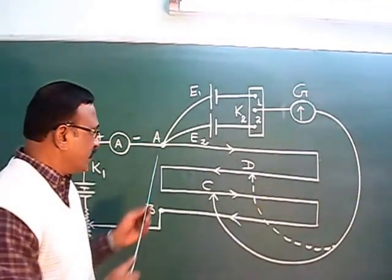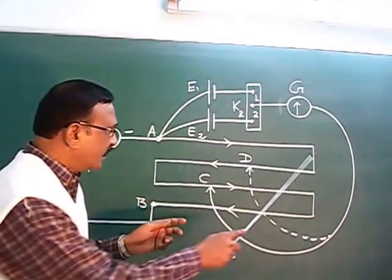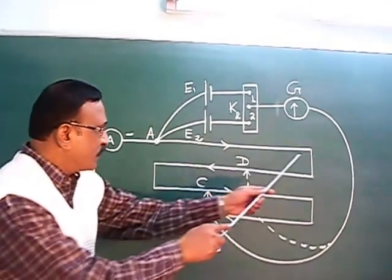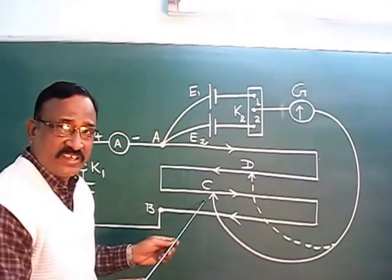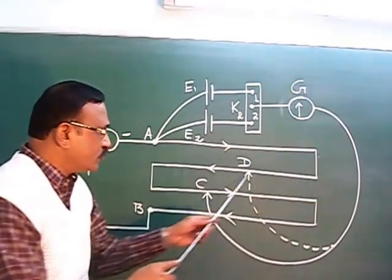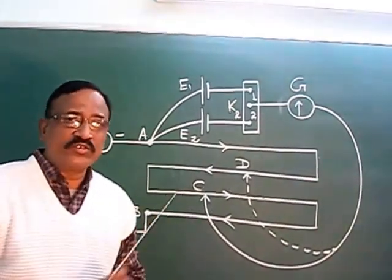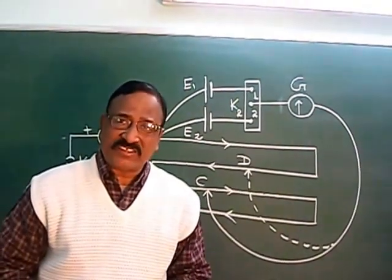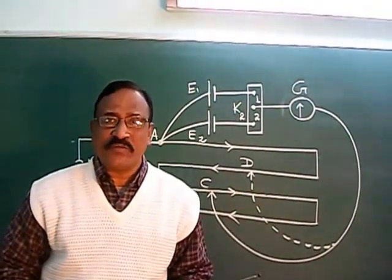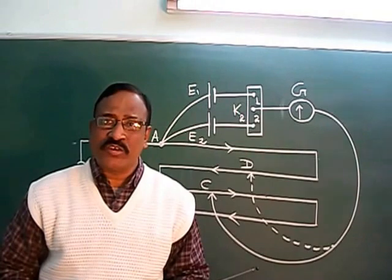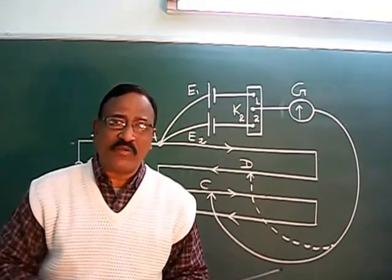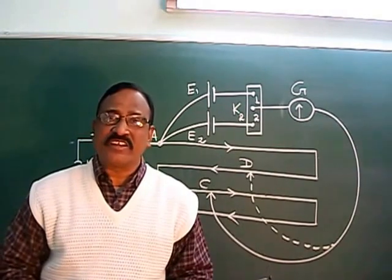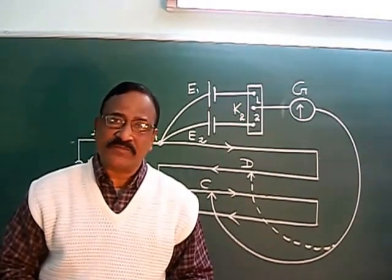Once you get the balance point, measure the length of wire used to balance it — for the first cell it is A to C, and for the second cell it is A to D. Once you know both balance lengths, divide the two lengths; that will give the ratio of EMF. As you have read in theory, E1/E2 = L1/L2. By dividing these two lengths, you can get the ratio of EMF of the two cells.